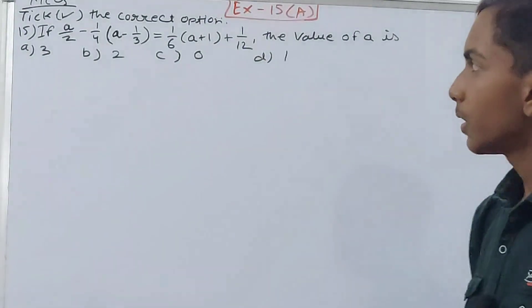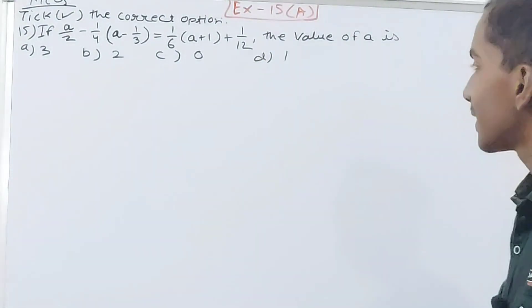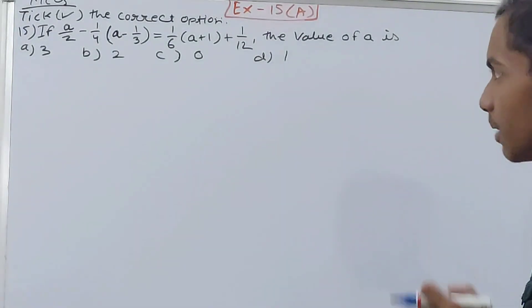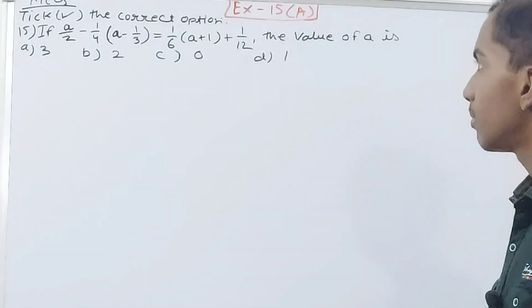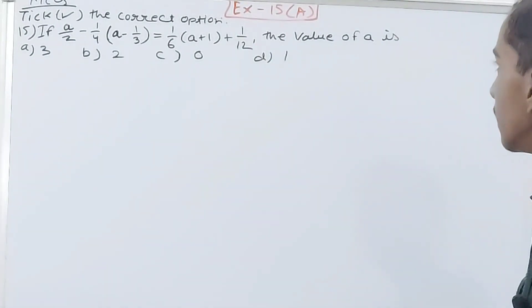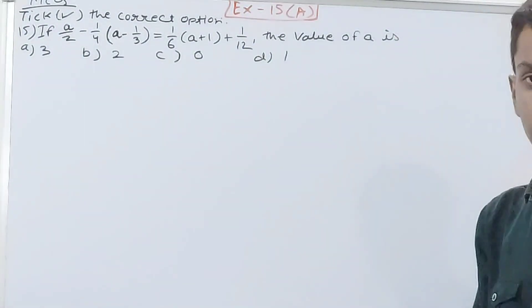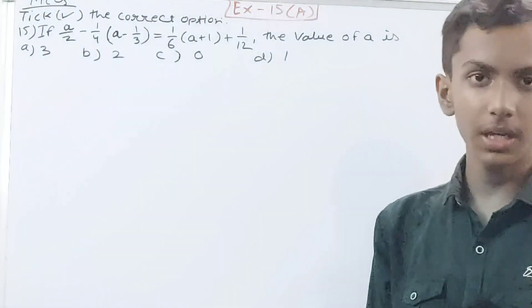It's an MCQ question. We've got: if a/2 minus 1/4(a - 1/3) equals 1/6(a + 1) plus 1/12, then the value of a is. So we just have to solve this equation to get the value of a and that will give us our answer.